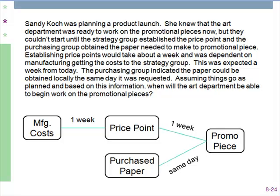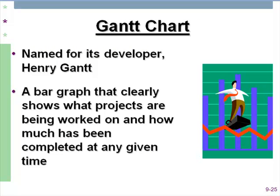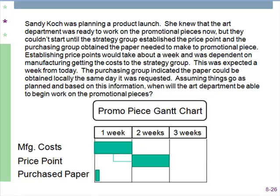You focus on your critical path — the longest route through the process. A Gantt chart takes the same kind of information but puts it into a bar graph, showing the timeline as horizontal bars across different groups — manufacturing costs, price point, purchasing paper — and draws lines showing dependencies. The one that extends farthest out is how long the whole thing will take. So we've walked through a PERT chart, a Gantt chart, and driven home the idea of a critical path.